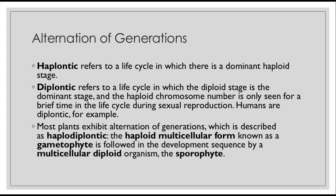Most plants exhibit what is called alternation of generations, also called haplodiplontic. The haploid multicellular form is called the gametophyte — that makes sense, because the haploid number is associated with gametes. That's followed in the development sequence by the multicellular diploid organism, the sporophyte. If you write it all out and make some flashcards, you'll get to know these terms really rather quickly.